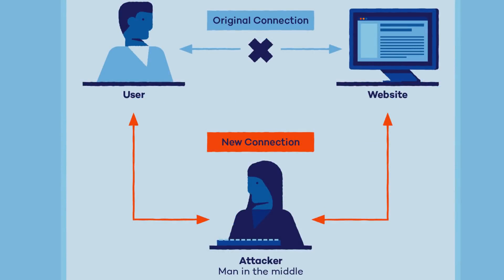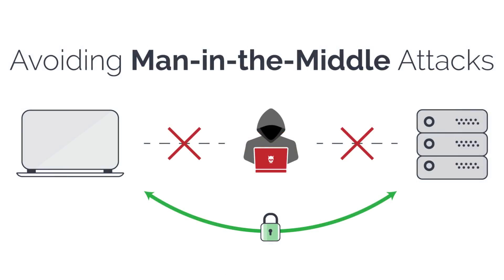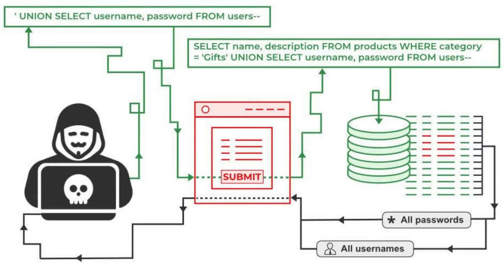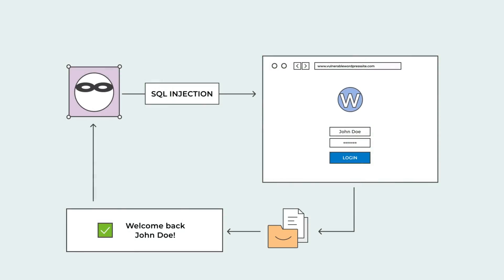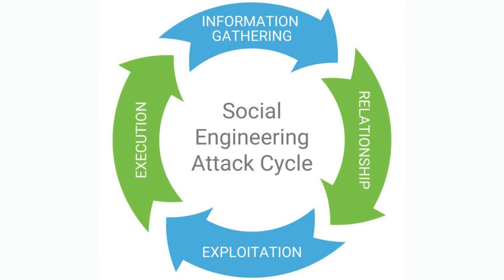The fourth type is man-in-the-middle (MITM). In MITM attacks, hackers intercept and alter communication between two parties, allowing them to eavesdrop, steal data or inject malicious code. The fifth type is SQL injection, where attackers exploit vulnerabilities in web applications by inserting malicious SQL code, gaining unauthorized access to databases and potentially manipulating or extracting sensitive data.